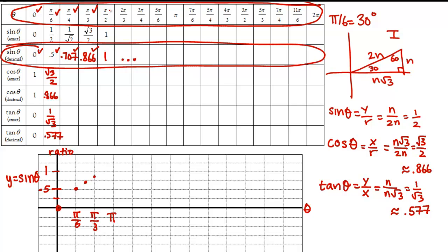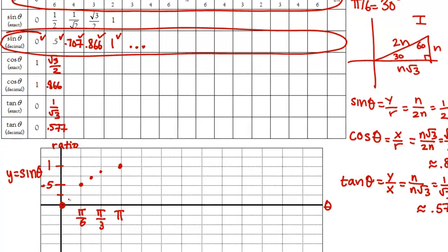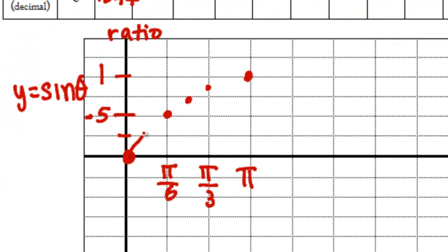At pi over 3, I plot approximately 0.866. Then at pi over 2, I have a ratio value of 1. Then I'm going to connect the dots with a curve.